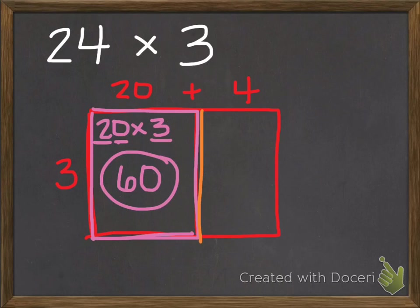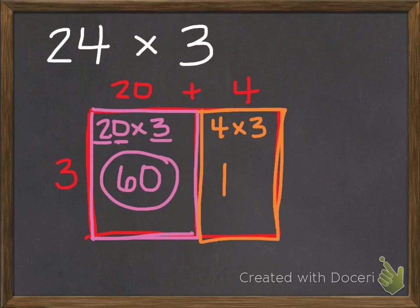But now I still have one more rectangle to look at. It's this one over here. And it is 4 by 3. So 4 times 3. And I know from knowing my facts that 4 times 3 is 12. So the area of this rectangle is 12. Now, I've broken this 24 times 3 into two smaller parts. So I just need to add the two parts.